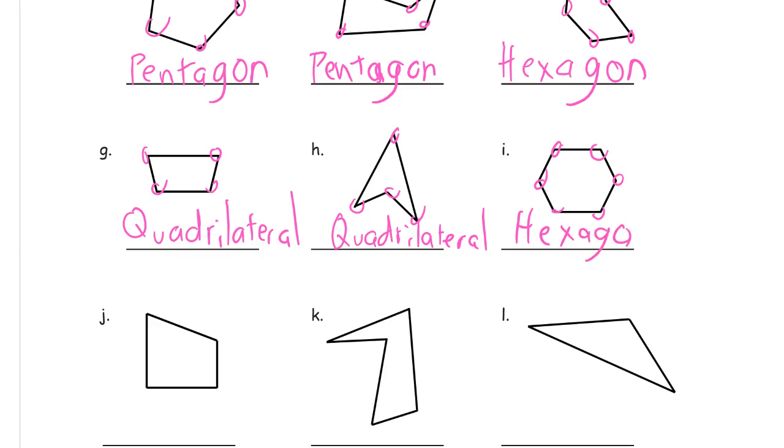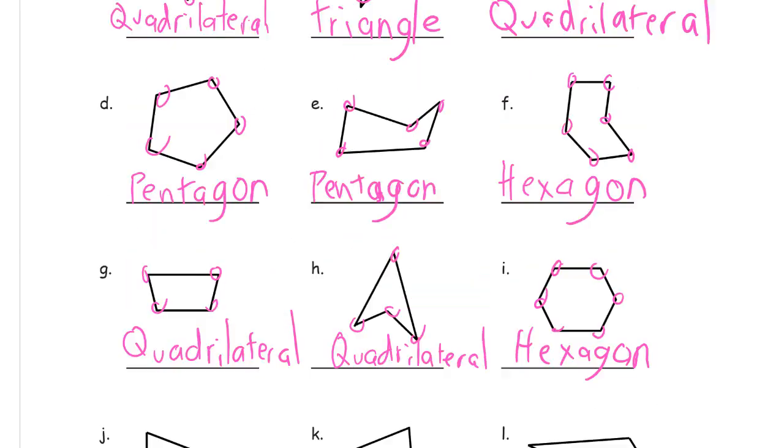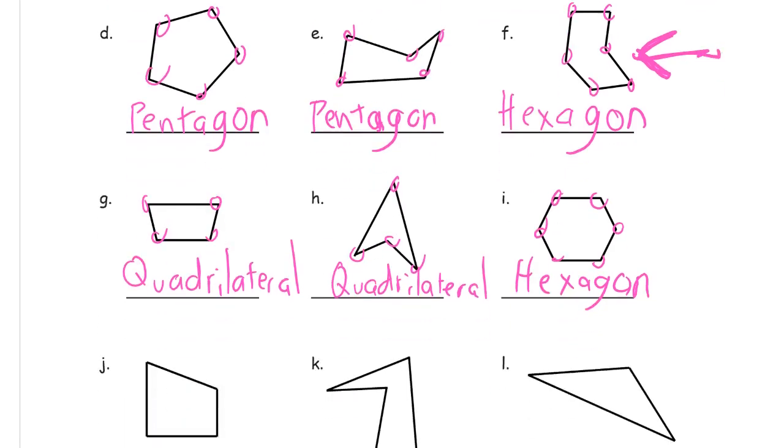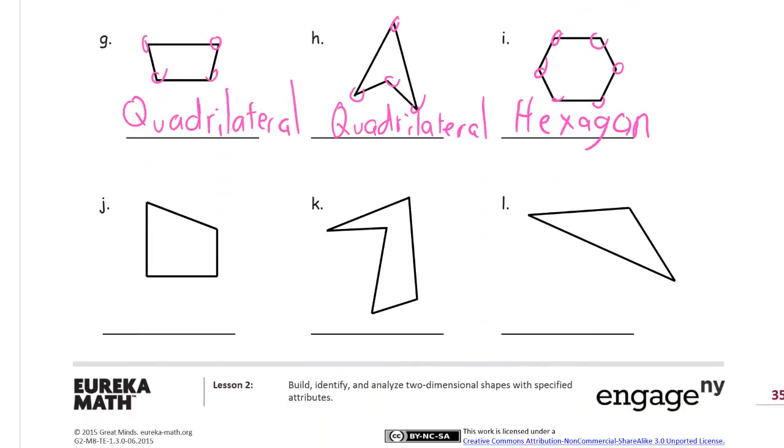We think of this, when we see this hexagon, if you like the pattern blocks that a lot of times you see in school, they're the yellow ones. And that's usually what most people think of as a hexagon, but it doesn't have to look like that to be a hexagon, right? Because this is a hexagon, too. All it has to have is six straight sides and be flat and closed. 1, 2, 3, 4. That's a quadrilateral.